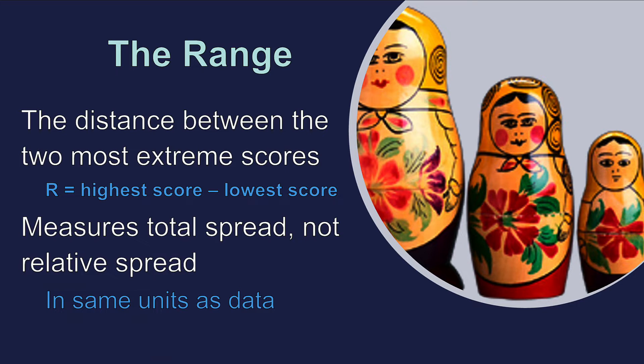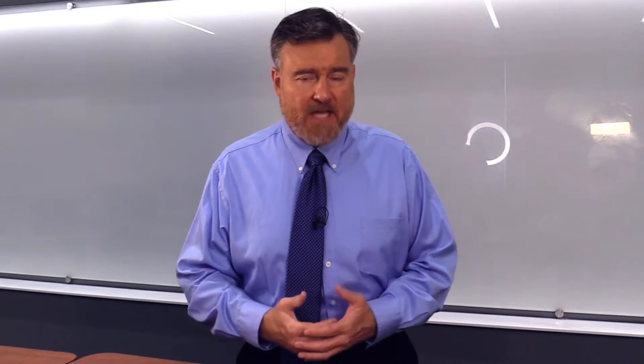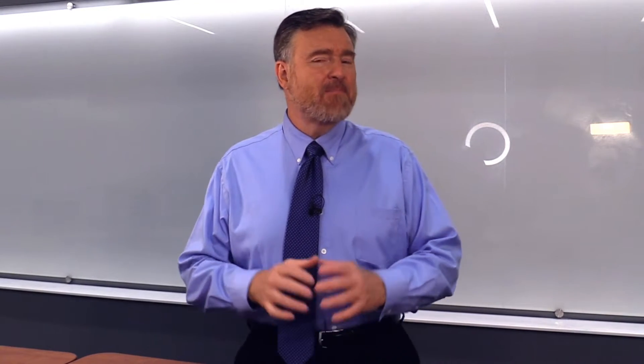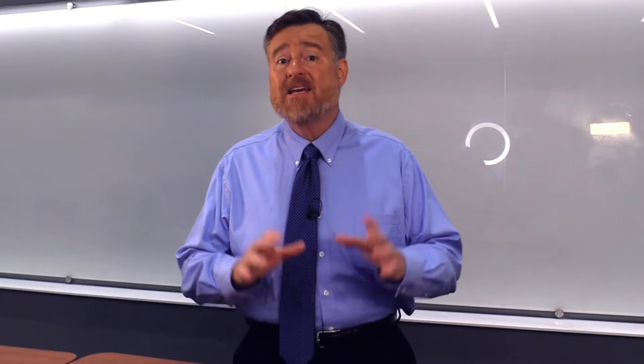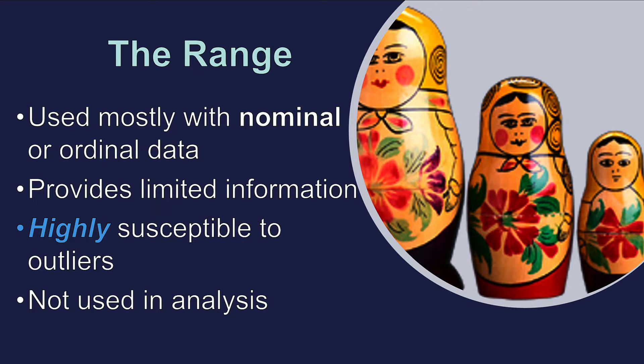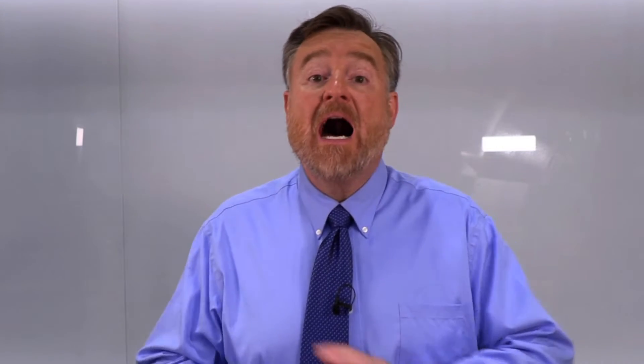We will typically not use the range with scale-level data. We could, but it provides limited information and it is highly susceptible to outliers. Therefore, we will probably use the range with nominal, ordinal, or some kind of categorical data — for example, what was the most popular toy, what was the least popular toy. The range is more susceptible to outliers than any other measure; you add an outlier and it blows out the end of that range.